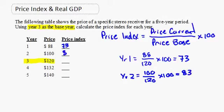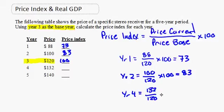Year two equals 83, so we fill in 83. Year three is the base year, so it's 120 divided by 120 times 100 — the base year index is always 100. For year four, it equals 132 divided by 120 times 100, which equals 110.